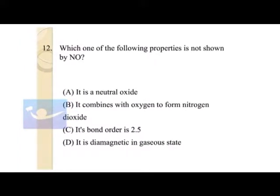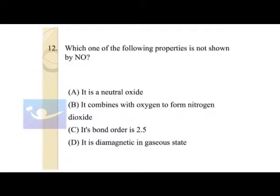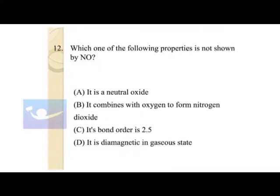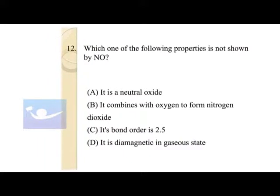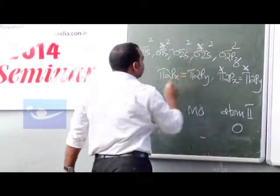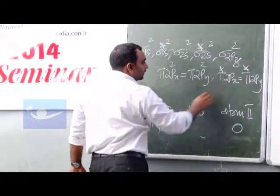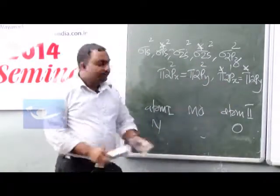Then pi 2px, which is having equal energy of pi 2py, then pi star 2px equal to pi star 2py. This is the electronic configuration and if you are distributing the electrons - nitrogen, how many? Atomic number of nitrogen 7, atomic number of oxygen 8, together 15. So 2, 4, 6, 8, 10, 12, 14, then 15.